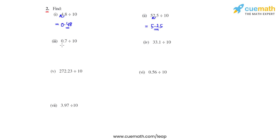Coming to the third bit, we have 0.7 divided by 10. So the decimal will now move one place towards the right, and the answer for this bit will be 0.07.